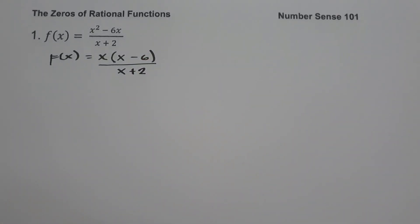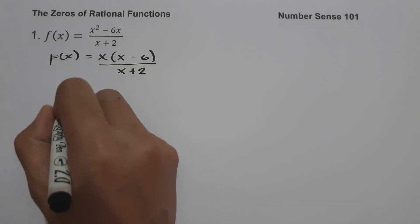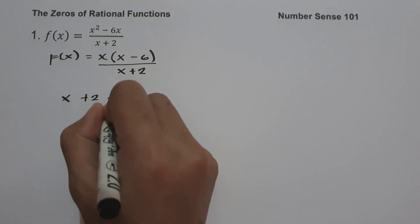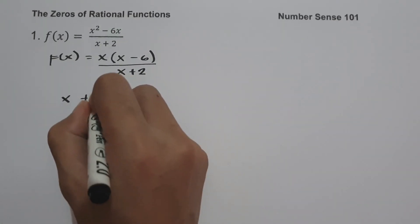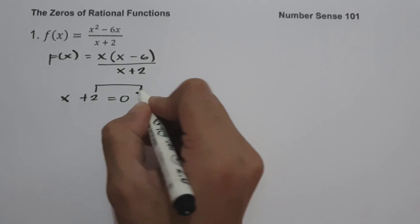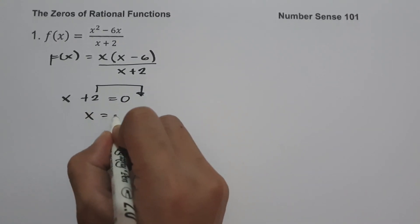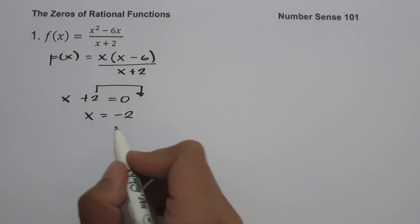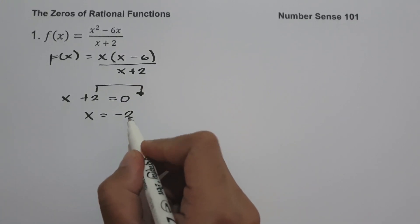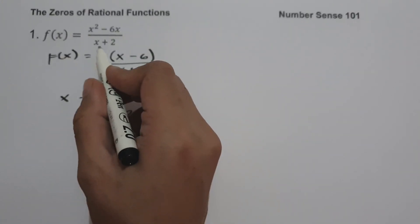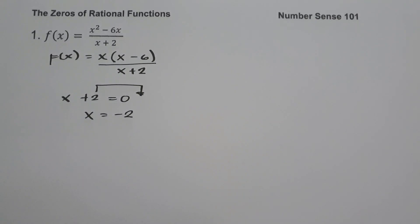The next step is to identify the restriction — the value of x that makes our function undefined. To find the restriction, we set the denominator equal to 0: x plus 2 equals 0. Moving 2 to the other side gives us x equals negative 2. So the restricted value is negative 2, because substituting it into the function gives undefined.